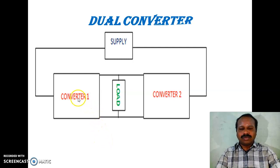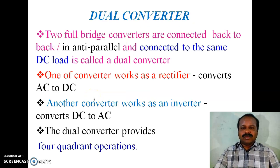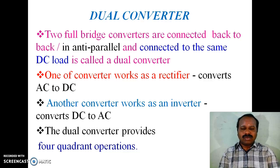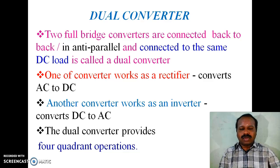In a dual converter, we are using two converters — Converter 1 and Converter 2 — where the load is common to both. Two full-bridge converters are connected back-to-back or in anti-parallel to the same DC load. One converter works as a rectifier that converts AC to DC, and the other works as an inverter which converts DC to AC. The dual converter provides four quadrant operation.